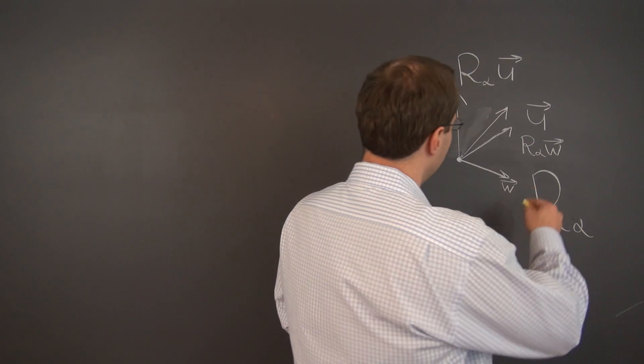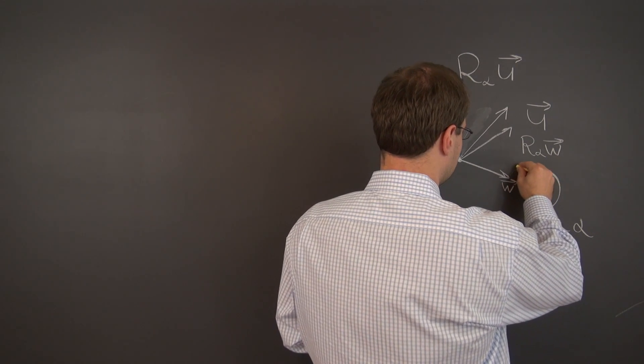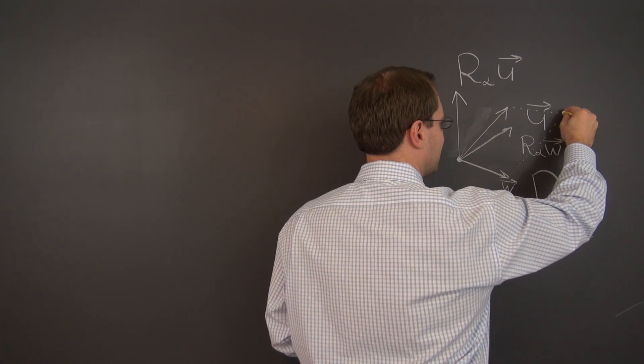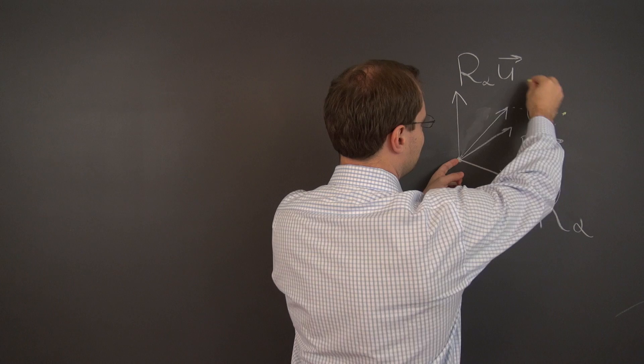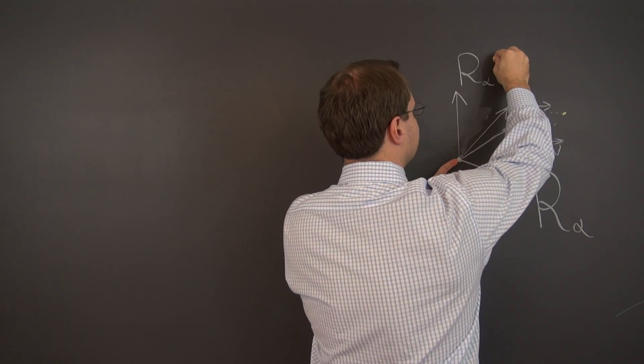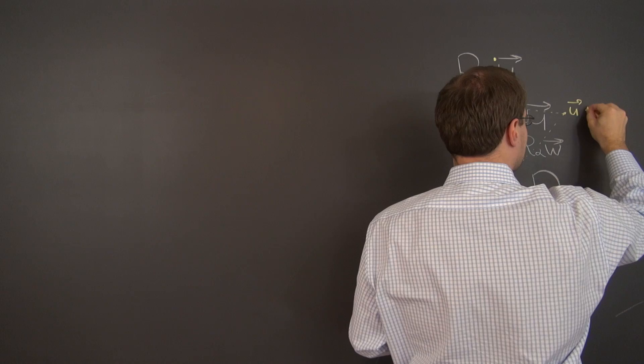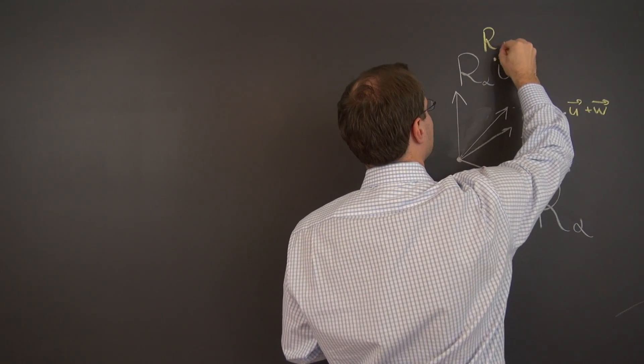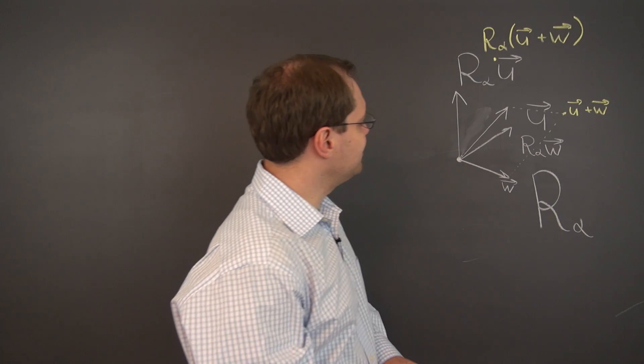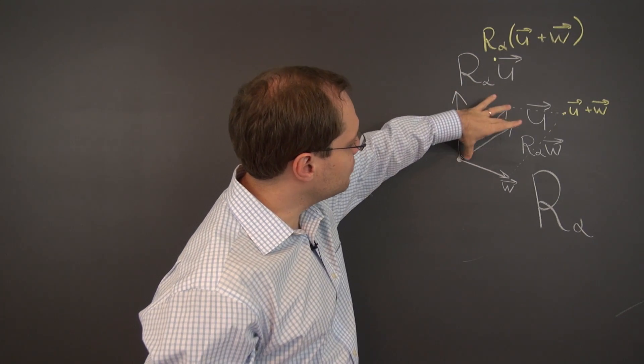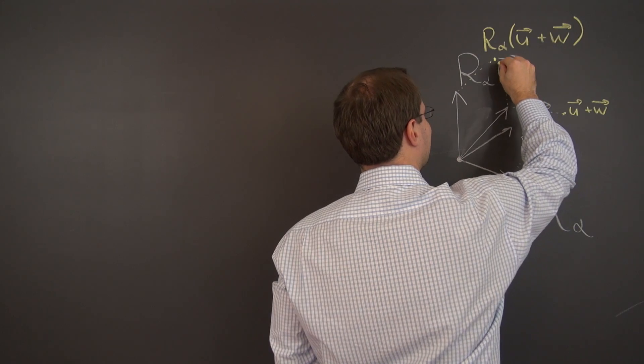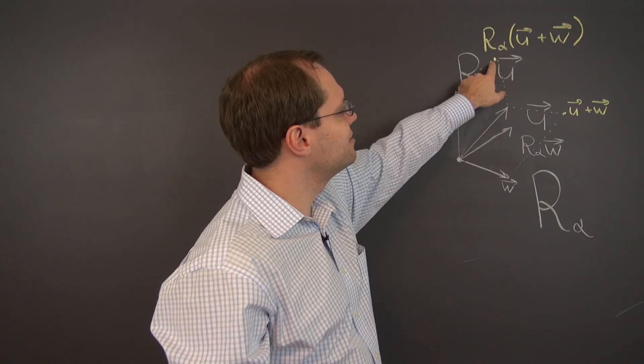Let's use a different color. Here is u plus w. Right here, here is its tip. Now let's rotate the result by 45 degrees, which would land right about here. So if this is u plus w, then this is u plus w rotated. And is it the same as the sum of rotated u and rotated w? Well, let's visualize. I'll draw it with the parallelogram rule. I cheated a little bit—I kind of knew where it had to land. But it looks like it sure matches.